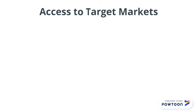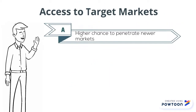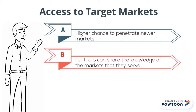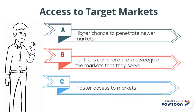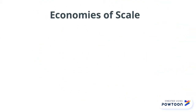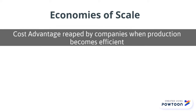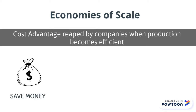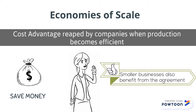Companies have a higher chance to penetrate into newer markets as they have access to established marketing and distribution systems, and knowledge of the markets that their partner is in, ensuring that products get to the market faster. Economies of skill refer to costs and advantages reaped by companies when production becomes efficient. Businesses can save costs as they share resources, and smaller companies benefit from alliances, allowing them to compete against larger competitors.